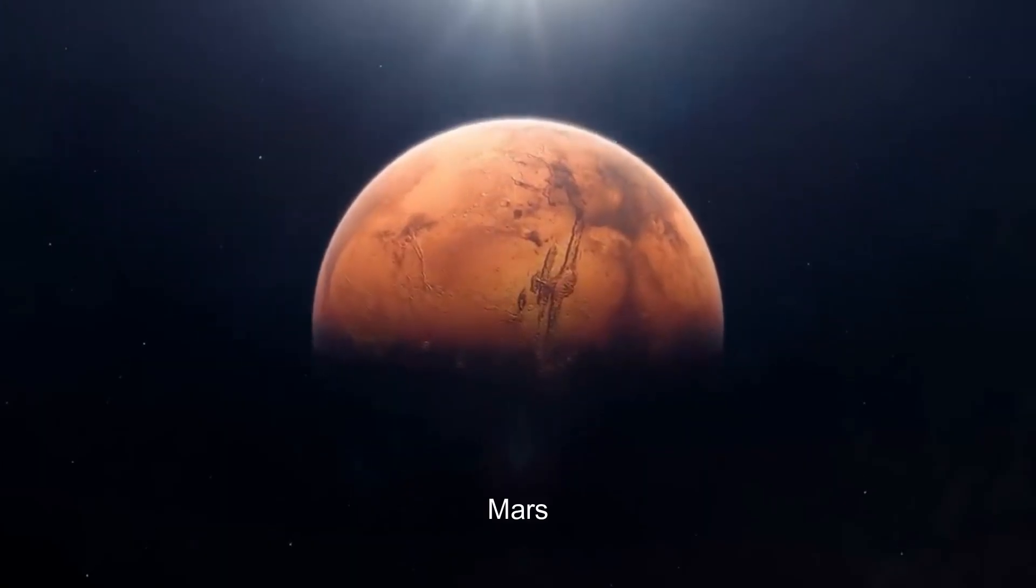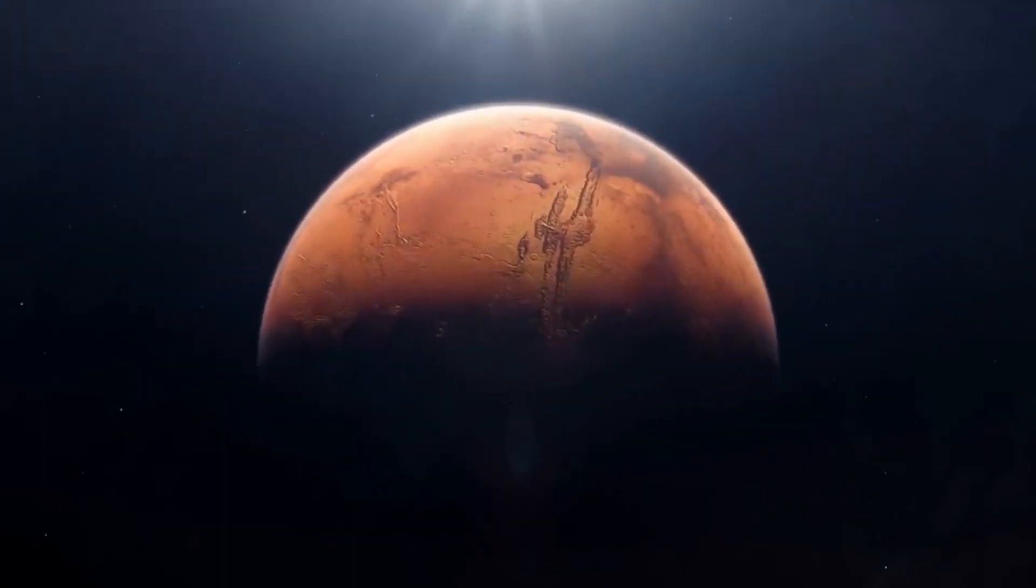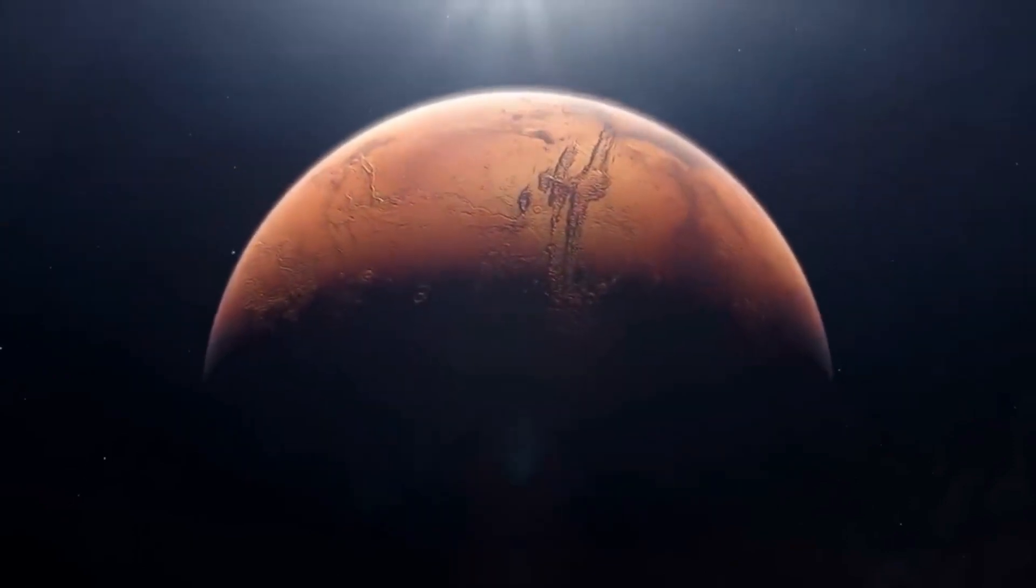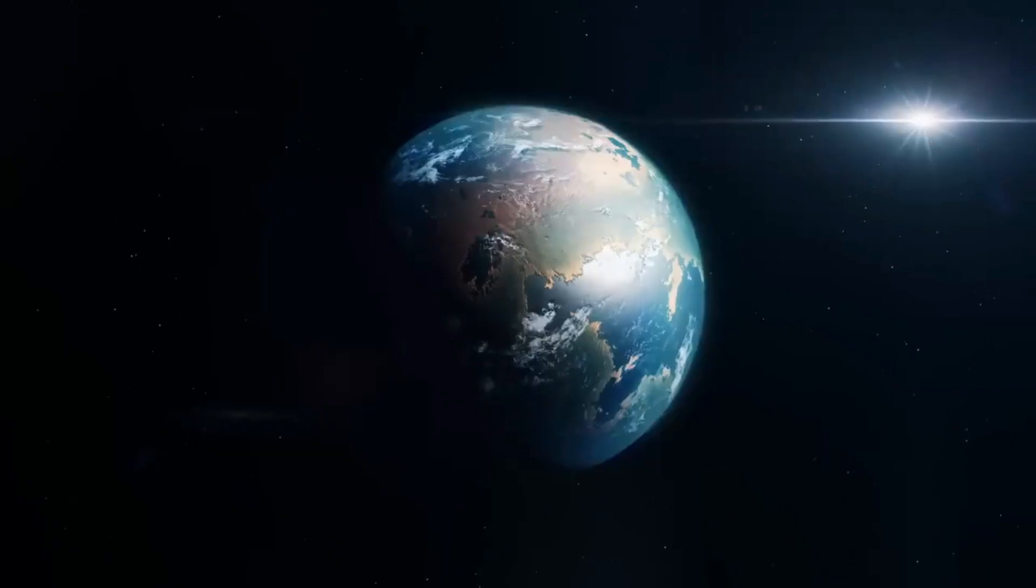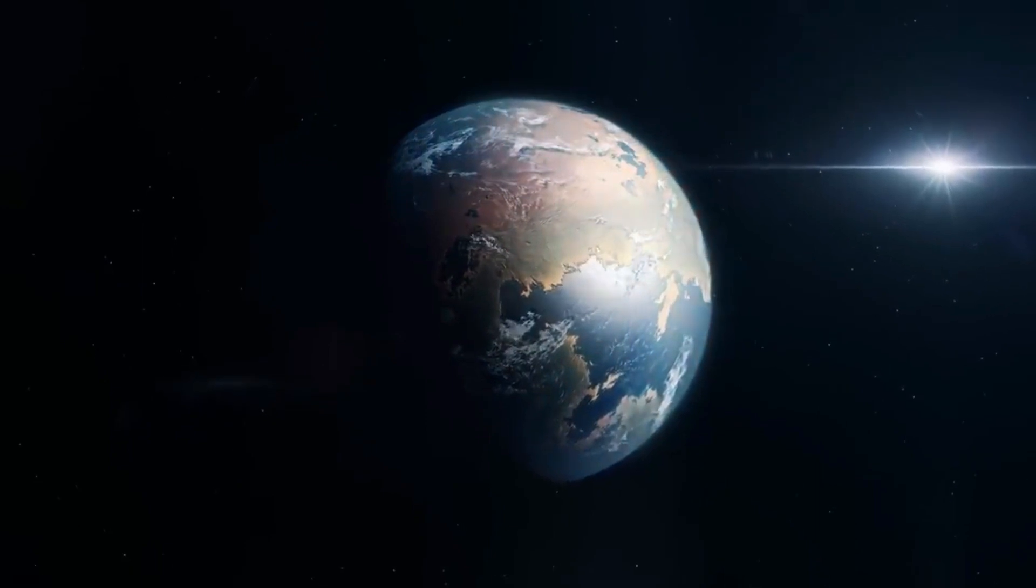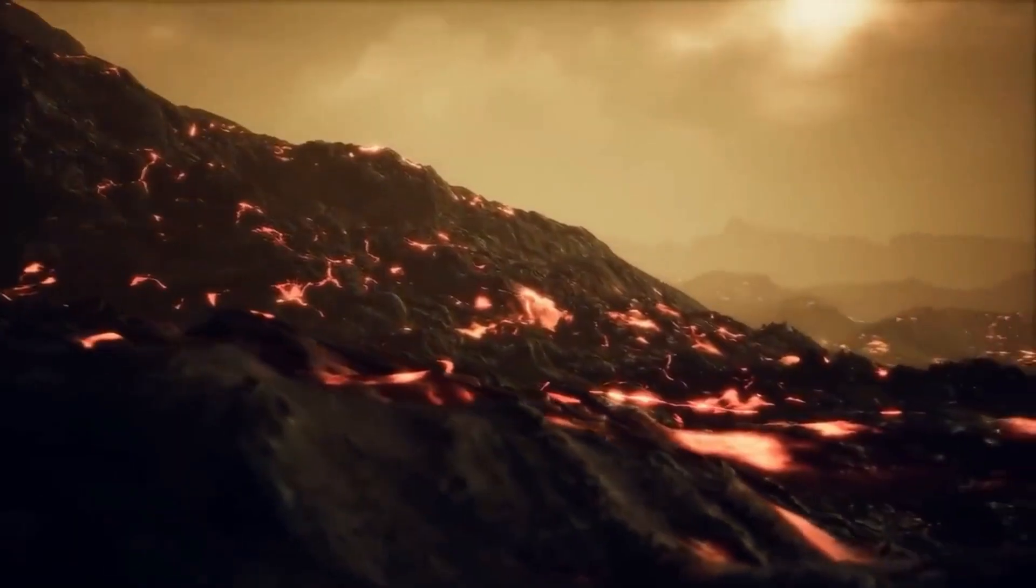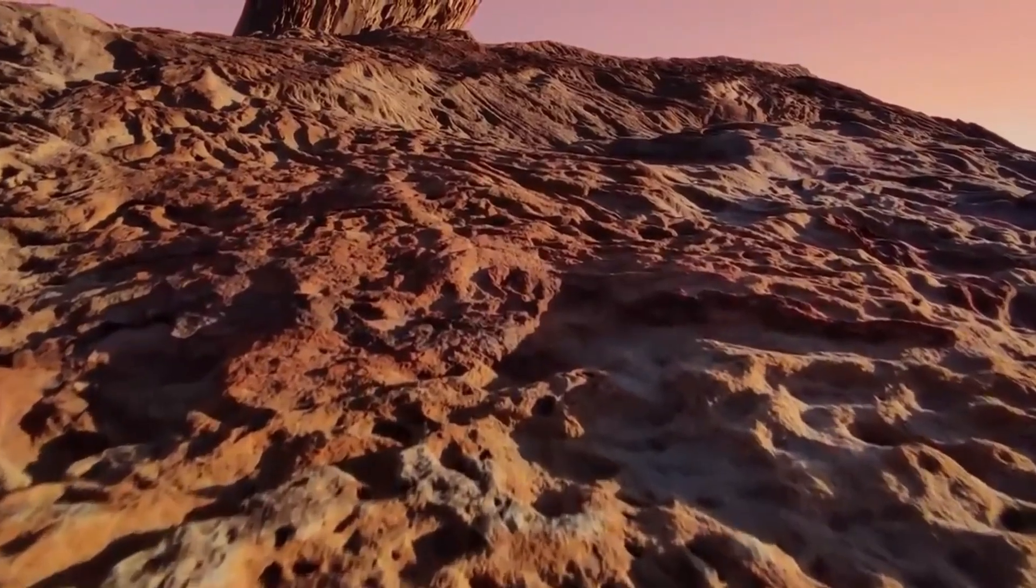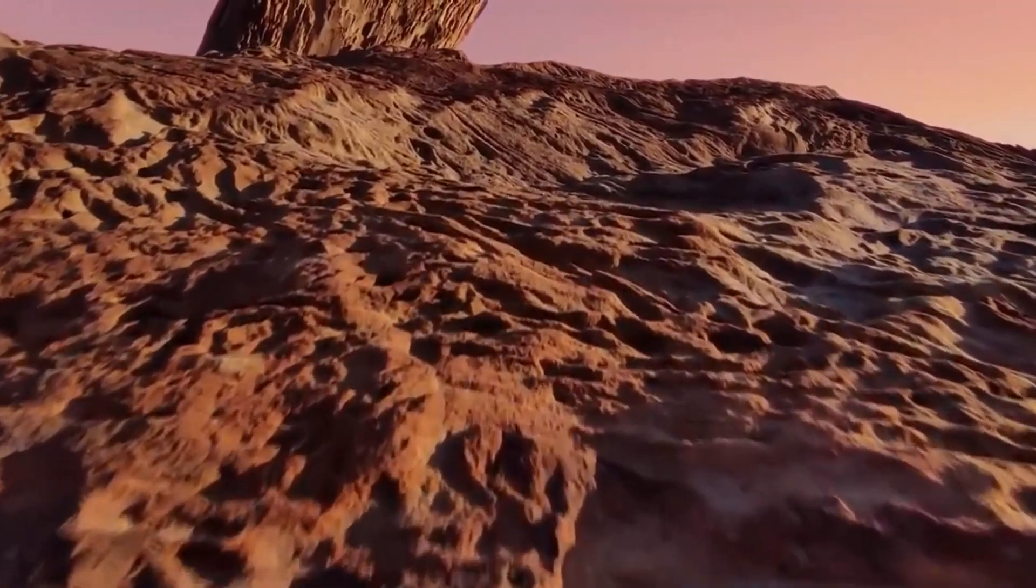Mars. Leaving for the next planet, we arrive at Mars, the fourth planet of the solar system. It has a landscape marked by extinct volcanoes, valleys, and canyons, as well as evidence of water in its past.